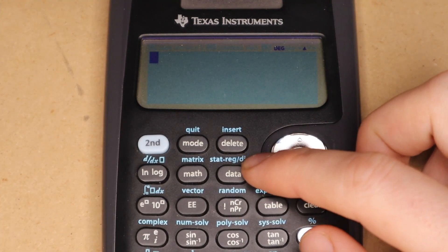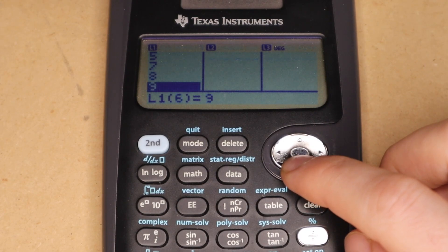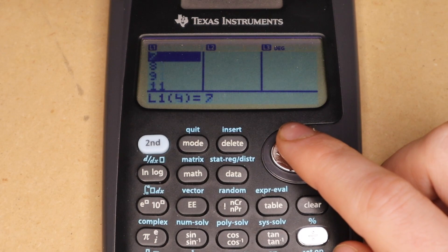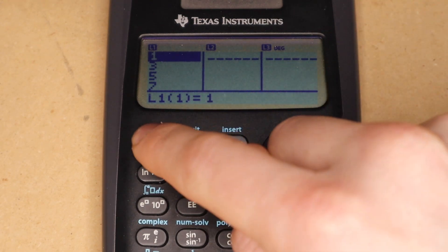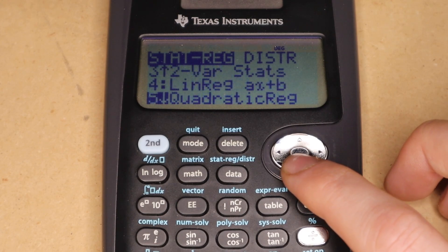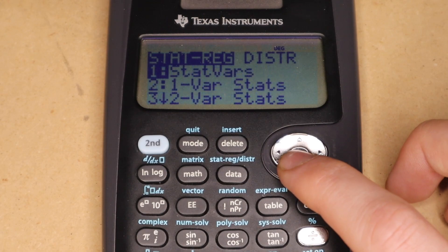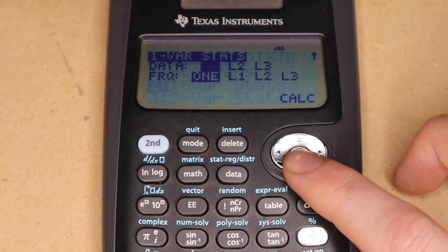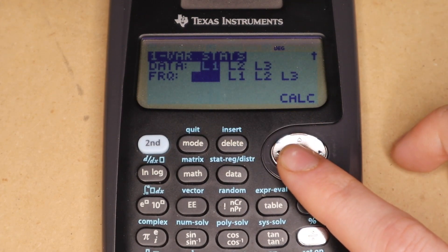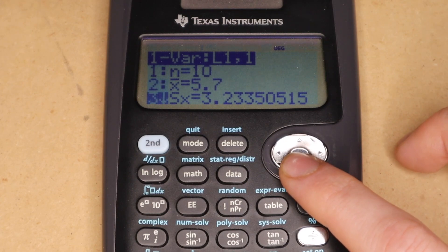So next is the data and statistics function. If you press the data key, you can enter a list of values. I have entered some values as an example. And then once you've done that, you can press second data. And you get this menu here with a bunch of different features, which I'm not going to cover all of. But you can see the menu and kind of get an idea.